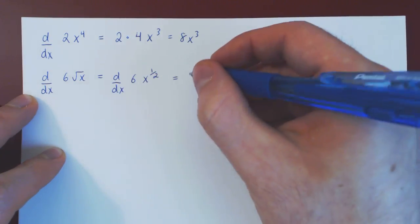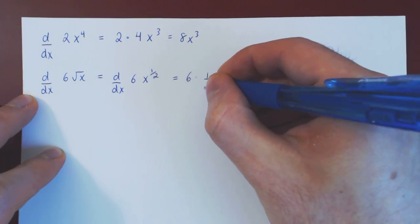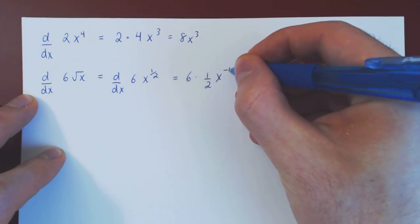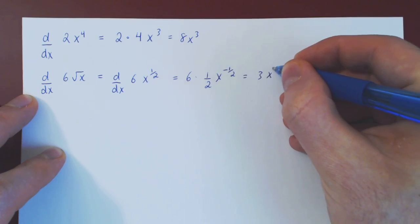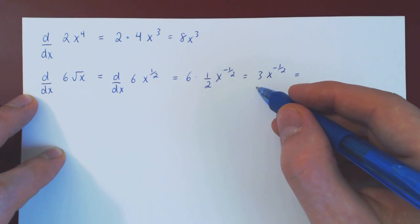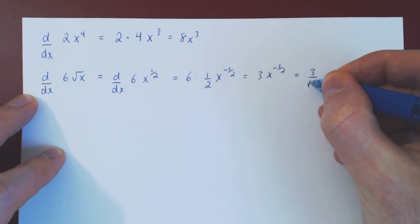6 being a scalar multiple stays there, we bring the exponent down, 1 half, times x to the 1 half minus 1 is negative 1 half. In the end 6 over 2 is 3, and if you want you can send this term down as 3 over x to the positive 1 half, which is the same as 3 over root of x.